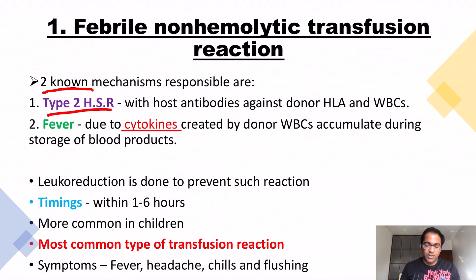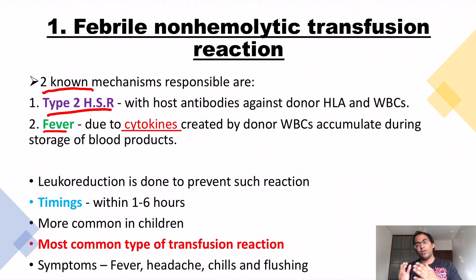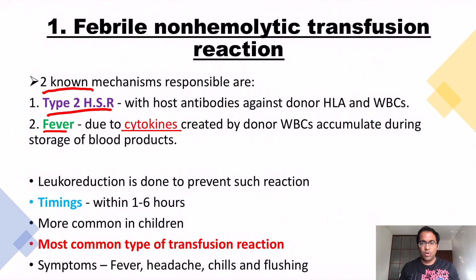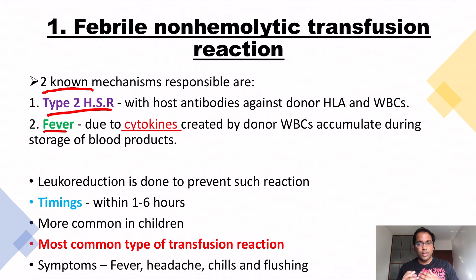There are two known mechanisms responsible for this reaction. The first is a type 2 hypersensitivity reaction. The old theory was that the host produces antibodies against the donor's WBCs or HLAs — human leukocyte antigens. The newer theory says that preformed cytokines present in the stored packet of blood were responsible for causing the fever. So the cytokines were created by donor WBCs that accumulate during storage of blood products. We do something called leukoreduction to prevent such a reaction.